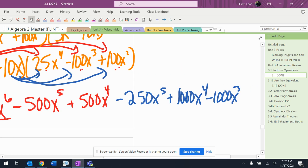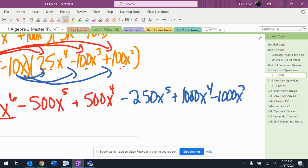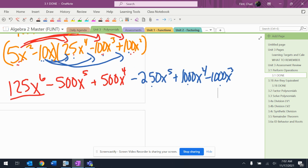I'm going to double check the blue just to be safe here. Negative 10x times 25x to the fourth is negative 250x to the fifth. That's fine. Negative 10x times negative 100x to the third is positive 1,000x to the fourth. And negative 10x times 100x squared is negative 1,000x to the third. All right. So be careful.